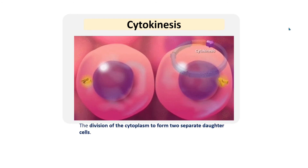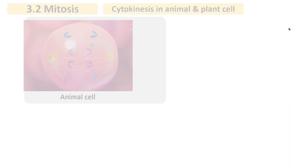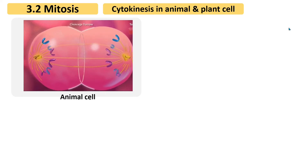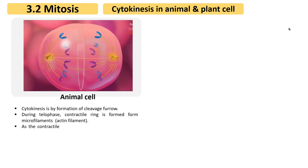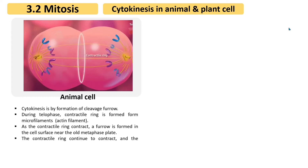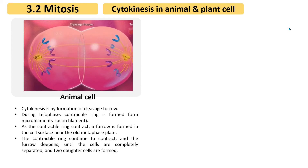Cytokinesis, the division of cytoplasm to form two separate daughter cells, occurs almost at the same time as telophase. The cytokinesis process differs in animal and plant cells. In animal cells, cytokinesis occurs by the formation of a cleavage furrow. During telophase, a contractile ring forms from microfilaments. As the contractile ring contracts, a furrow forms near the old metaphase plate, deepening until the two daughter cells are completely separated.